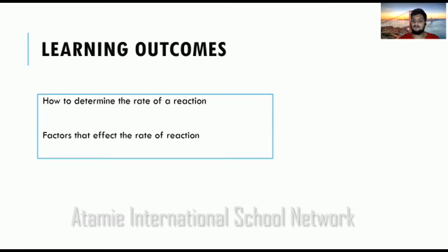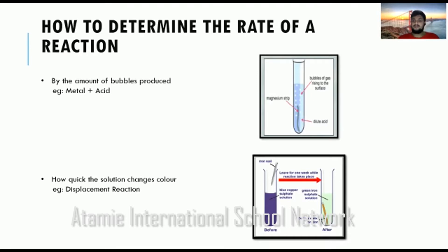There are certain factors we'll look into — all the factors that would change the rate of a reaction. Now, in chemical reactions, there are different chemical reactions in the world that you can do and that are being done. In all of the chemical reactions that happen, the most important thing that any person who conducts a chemical reaction does is look at the observations throughout the chemical reaction.